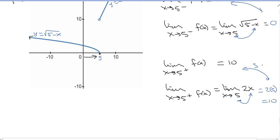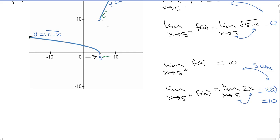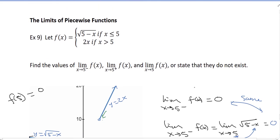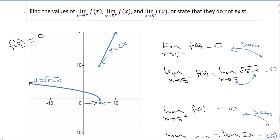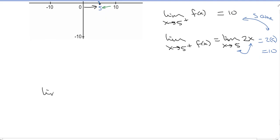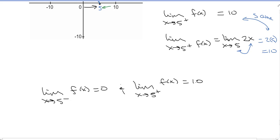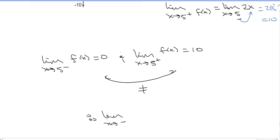We get the exact same limit. So if you have the graph, you just look at what you're getting close to from either side. Without the graph, coming from the left means you're less than 5, coming from the right means you're greater than 5. Now for the two-sided limit: the left-sided limit is 0 and the right-sided limit is 10 — these are not the same. Therefore, the two-sided limit as x goes to 5 does not exist. For a limit to exist, the left and right limits must be equal.